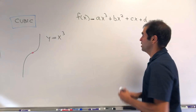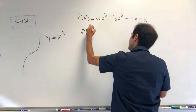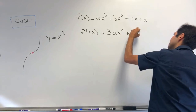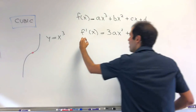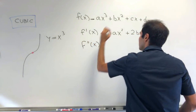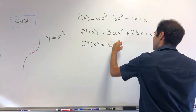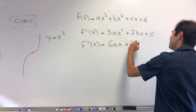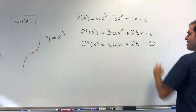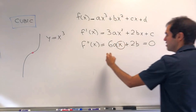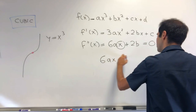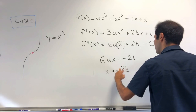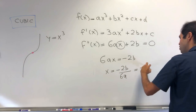Let's first find the inflection point. So f prime of x becomes 3ax squared plus 2bx plus c. And then f double prime of x becomes 6ax plus 2b. You set it equal to 0 and solve for x: 6ax equals minus 2b, so x equals minus 2b over 6a, which is minus b over 3a.